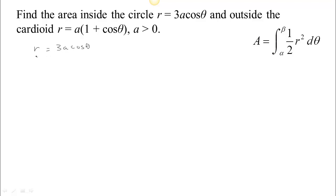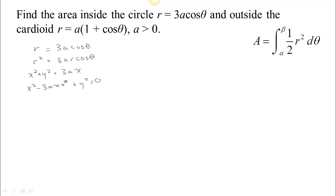Remember, we can convert this to Cartesian if we multiply both sides by r. Doing that makes this r squared, which is x squared plus y squared, and r cosine theta is x. So we have x squared minus 3ax plus y squared equals 0. The key to figuring out where the center of the circle is is to complete the square, so we have 3a over 2, which we square to get 9a squared over 4, and we add that to both sides.